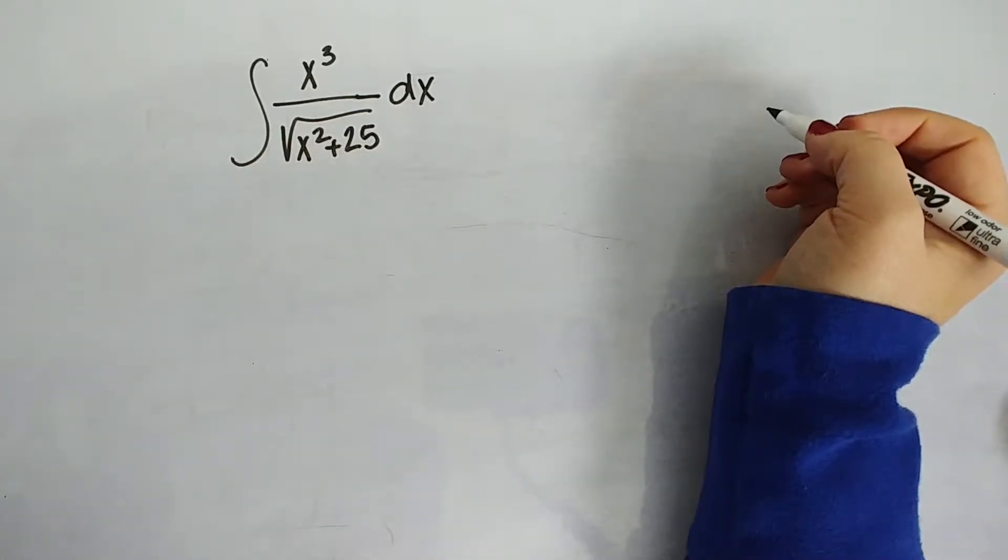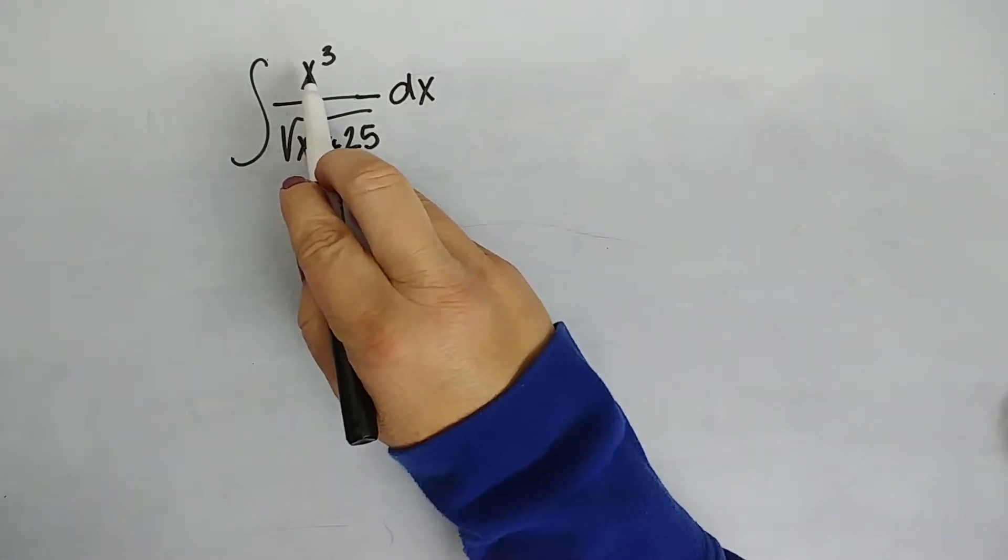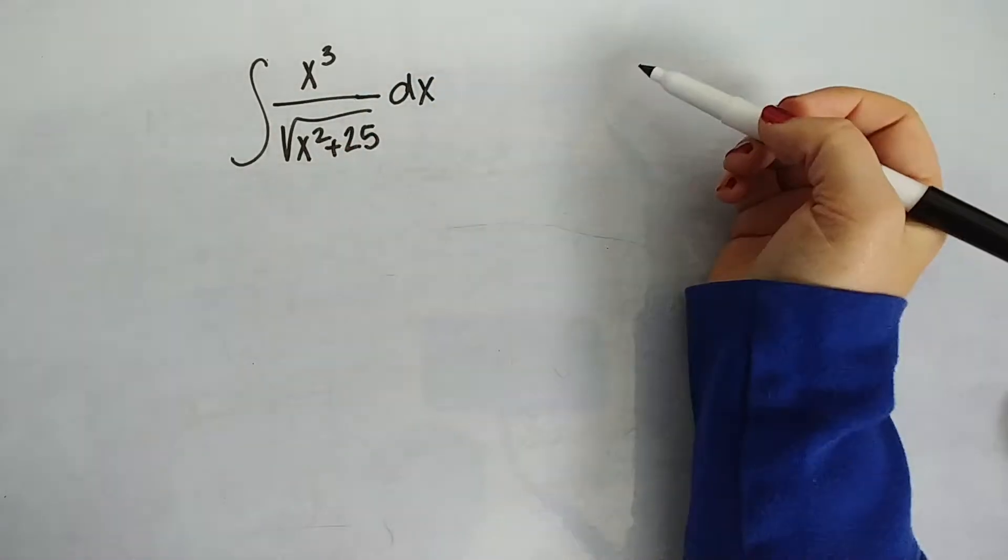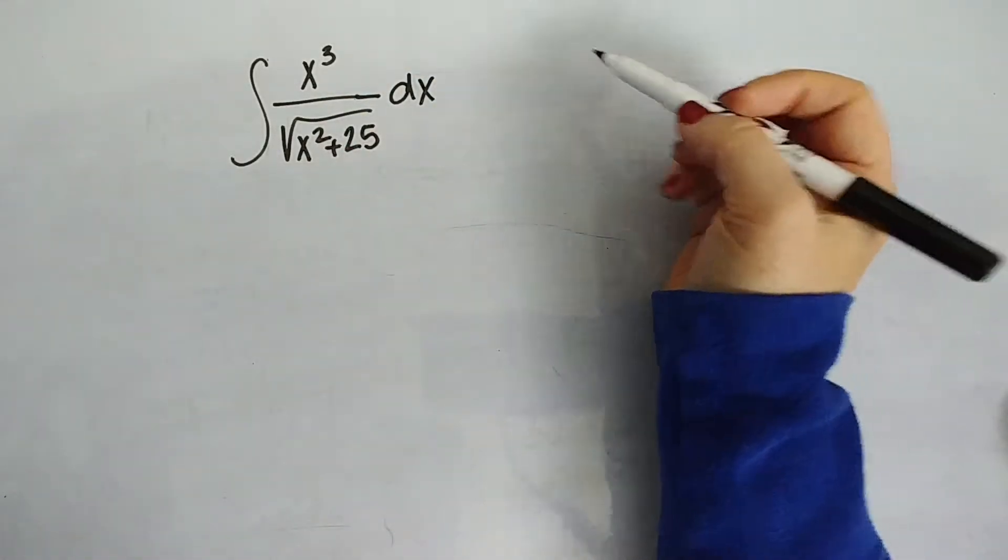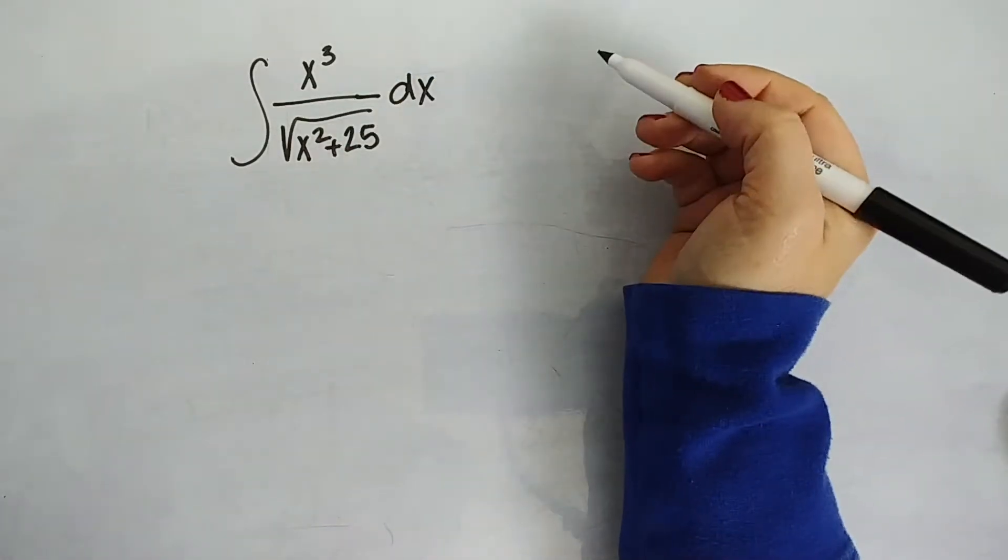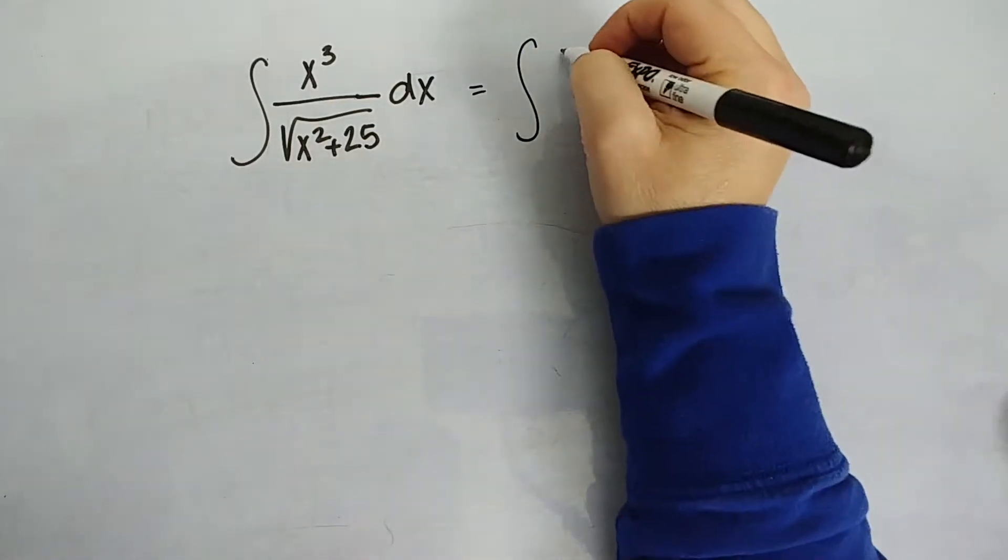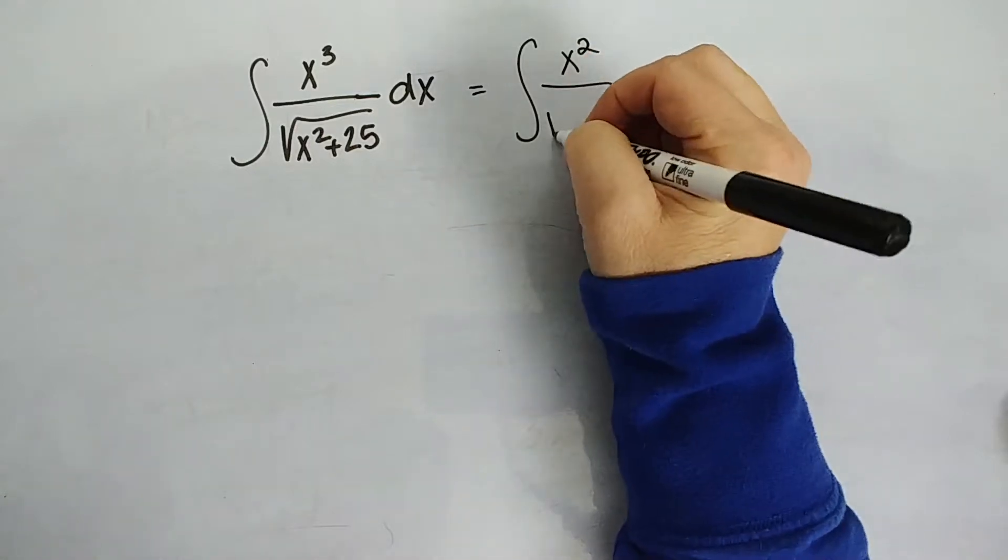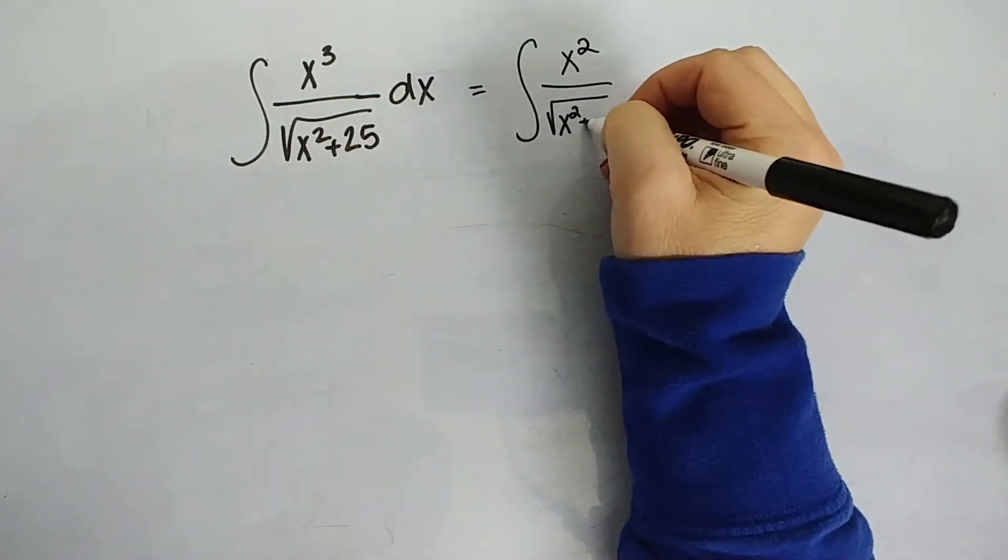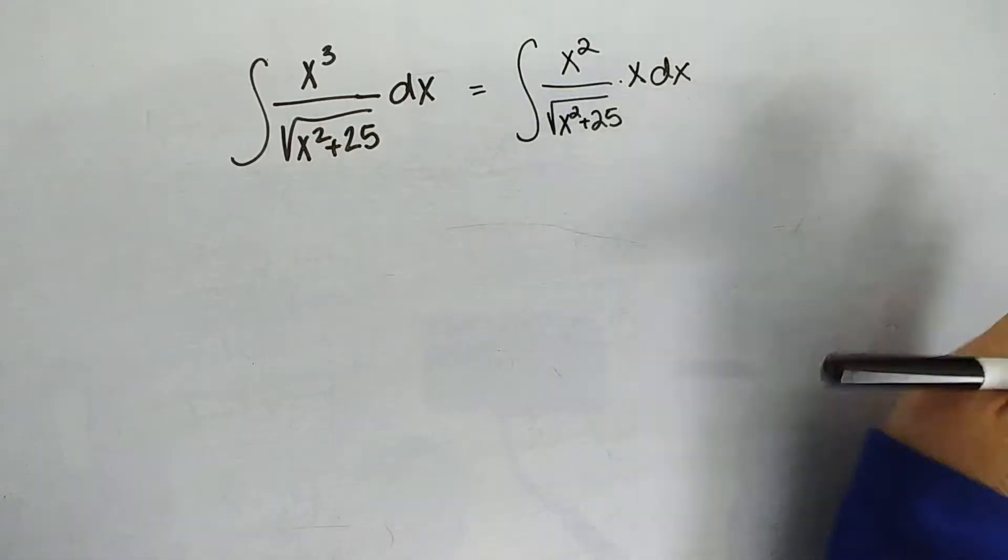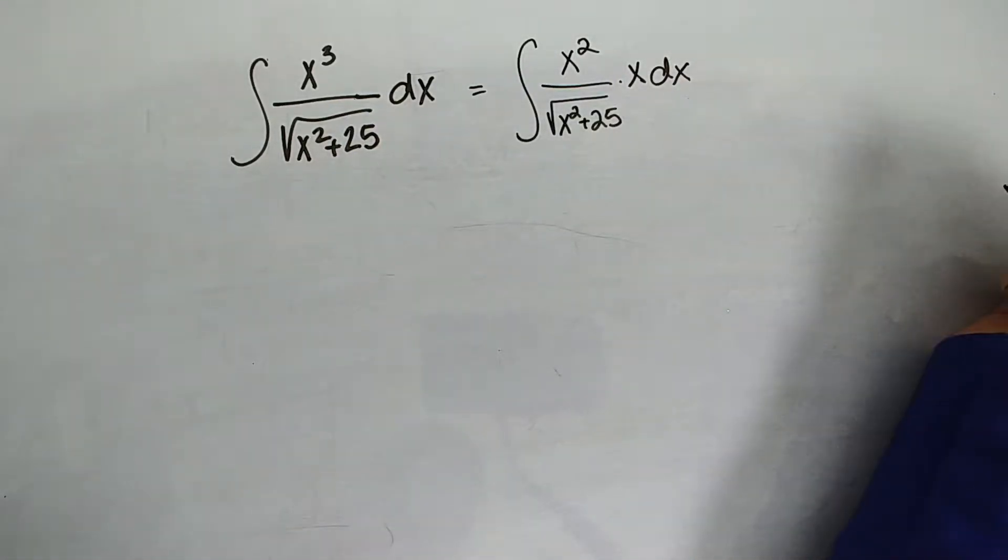So when we do that, we're going to say first of all, let's rewrite this before I even get started. This x cubed, I'm not going to be able to do anything with x cubed, but what I want to do is make an x squared. So I'm going to rewrite this as the indefinite integral of x squared all over the square root of x squared plus 25 times x dx. And I've seen patterns like this before, and that's going to help us when we get to our dx when we're substituting and using u substitution.